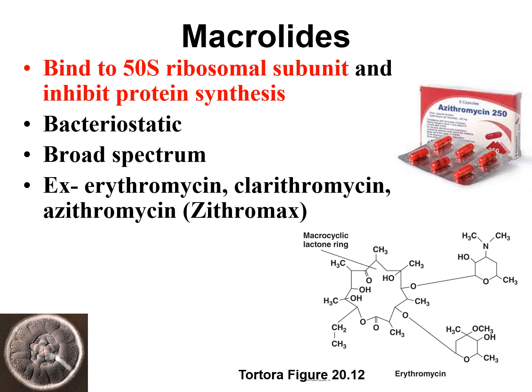Our next antibiotic that inhibits protein synthesis by binding to 70S ribosomes is the macrolides. Macro means big, and if you look at their chemical structure, they have a giant-sized ring — that's how they got the name macrolide. They bind to the 70S ribosome and inhibit protein synthesis. One macrolide you might have heard of is Zithromax, also called a Z-Pak, with the generic name azithromycin. Erythromycin is another — the first macrolide discovered, so it's an older one.